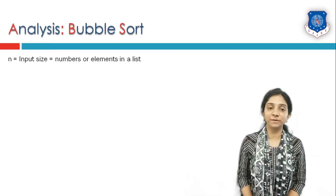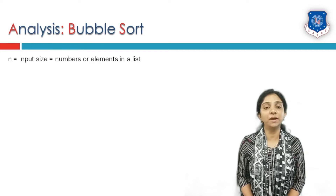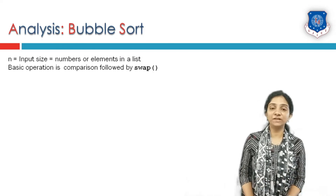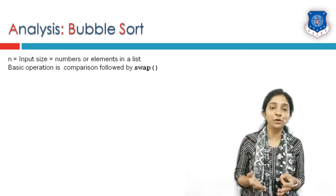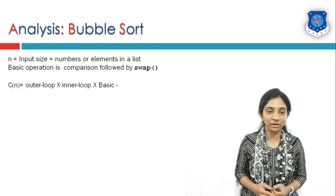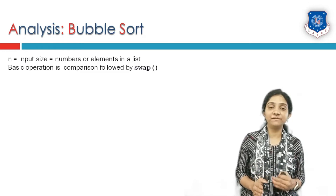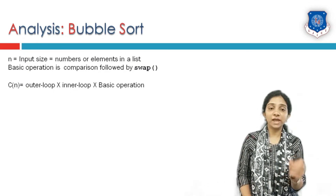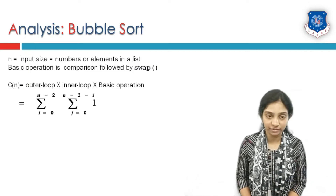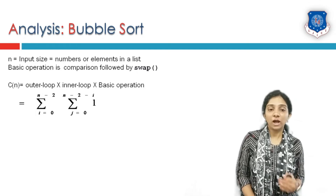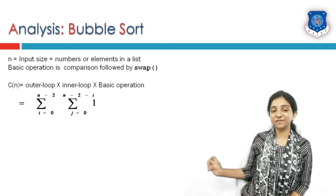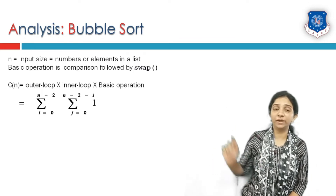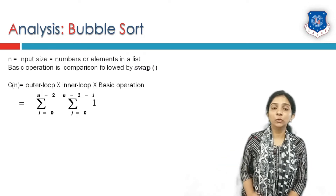Let us perform analysis of bubble sort. The input size is n, the number of elements in our list — in our example that was 5. The only basic operation performed in this algorithm is the swap operation. The number of steps is: outer loop times inner loop steps times the basic operation. There is only one basic operation, which is swap. The outer loop i goes from 0 to n minus 2, and the inner loop j goes from 0 to n minus i minus 2, and the basic operation counts as 1.